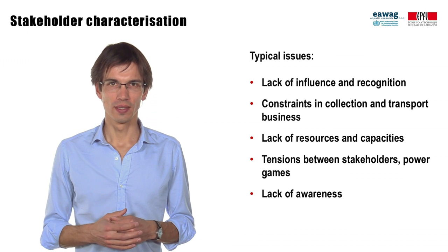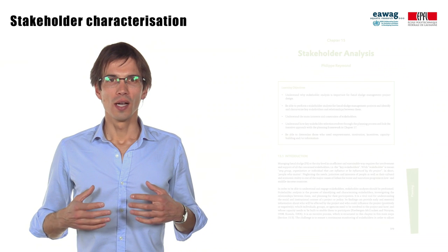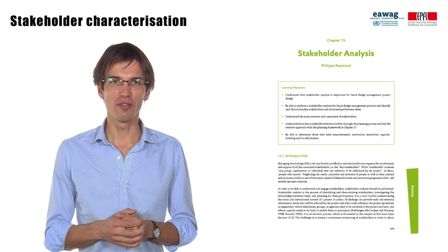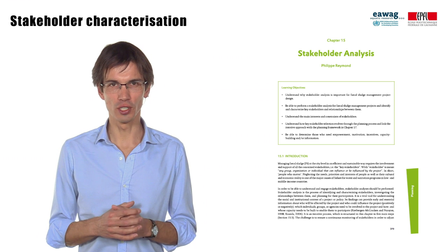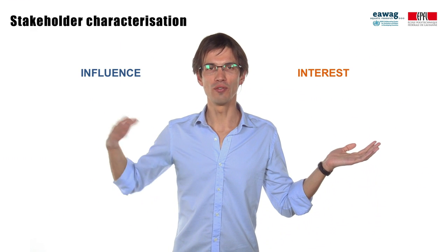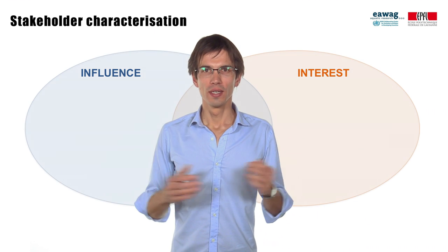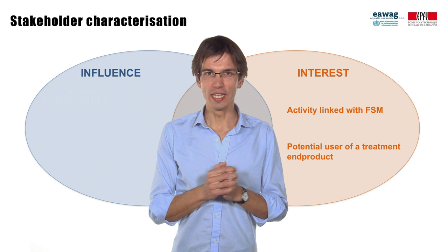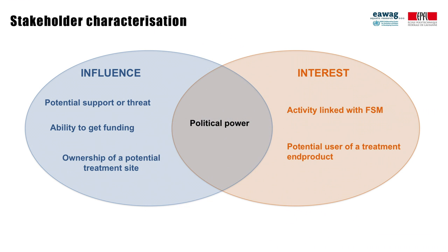Lack of awareness is typically an issue at household level. Something important to look at is who has an interest and who has influence, or lack of influence. This figure shows a few attributes relevant to either interest, influence, or both. For example, stakeholders having an activity linked to fecal sludge management have an interest. Authorities not directly related but still having the power to block the project have influence. Municipal authorities would be in the middle, having both a strong interest and also influence.